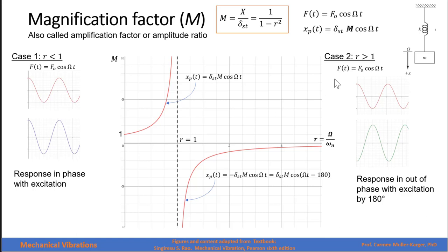Case 2 is when r is greater than 1. The magnification factor becomes a negative value, so the response has a phase angle of 180 degrees compared to the excitation force. The displacement is the static deflection times a negative magnification factor.